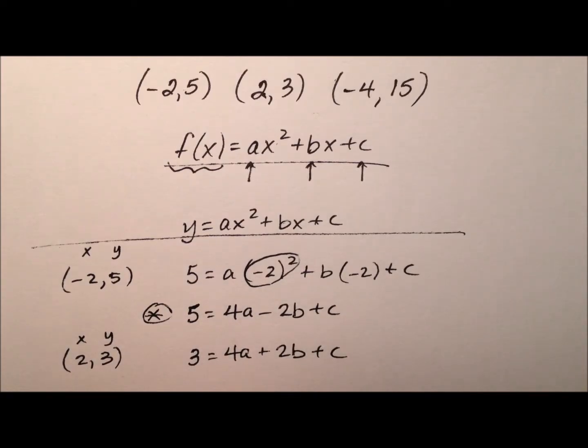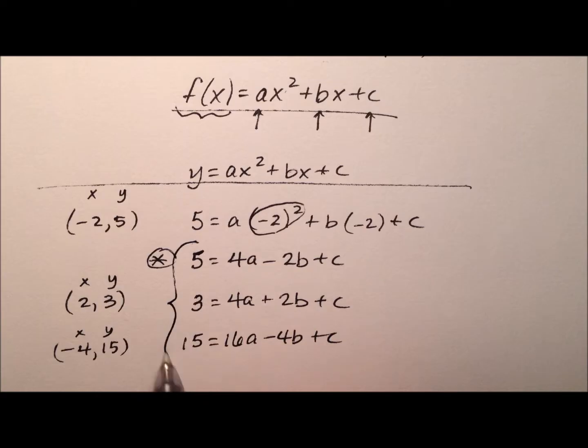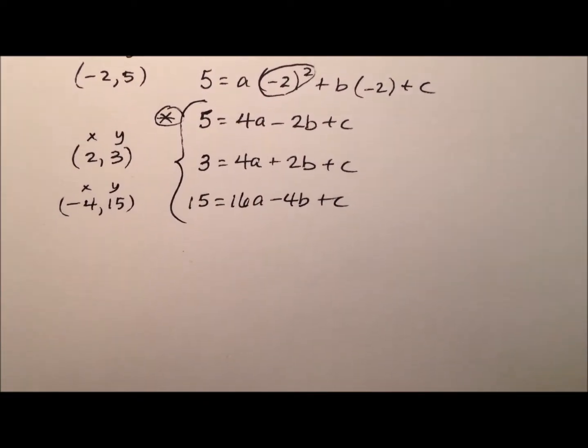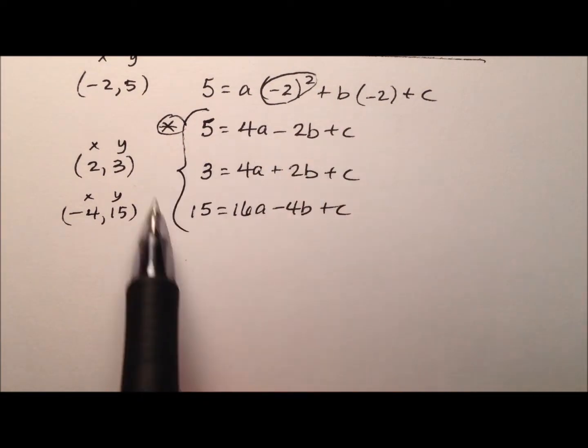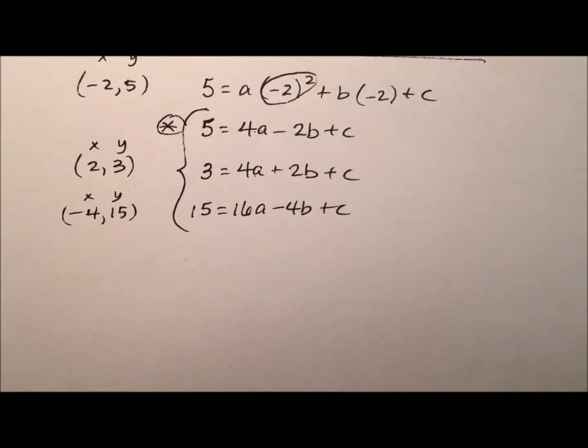Our final ordered pair is (-4, 15), so there's my x and there's my y. So my y is 15 equals, we're going to square the x, so 16a, and then bx, so minus 4b plus c. Right here, we have ourselves a nice system of equations. We have three equations, we have three unknown values, so let's solve.